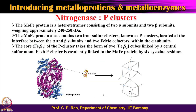The molybdenum iron protein is a tetramer, essentially a heterodimer of alpha-2 beta-2, with a molecular weight of around 240 kilodaltons. Combining this with the 60 kilodalton iron protein, the total molecular weight of the nitrogenase enzyme complex is around 300 kilodaltons — a very large protein composed of more than 3,000 amino acids.